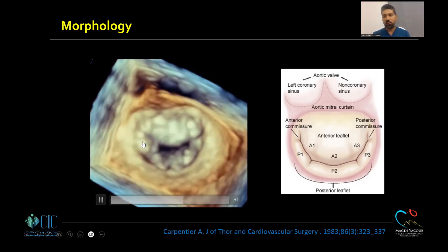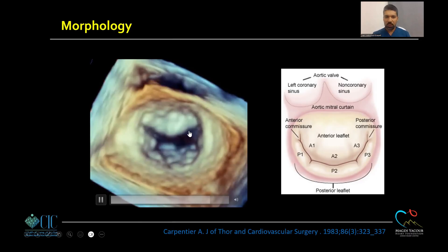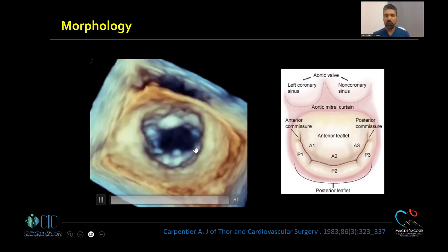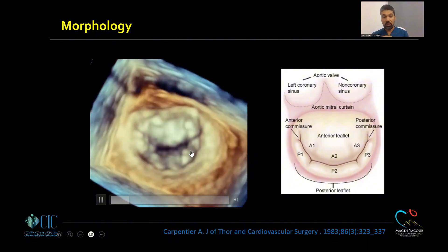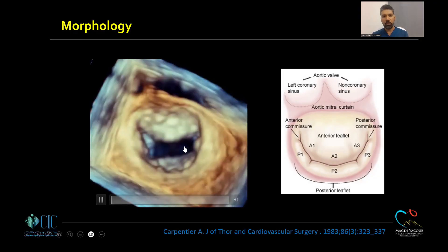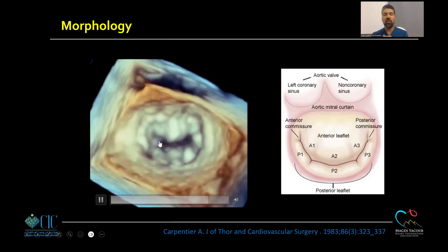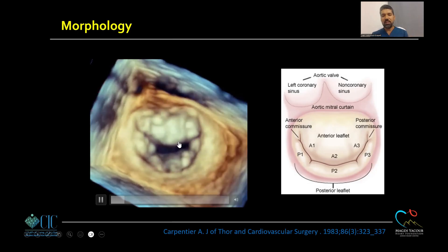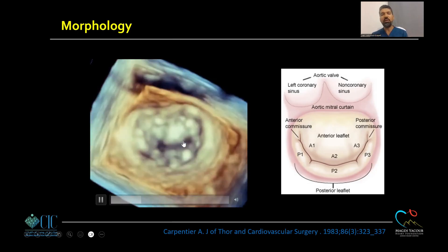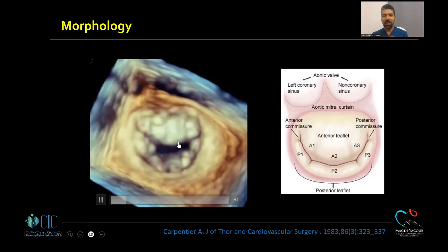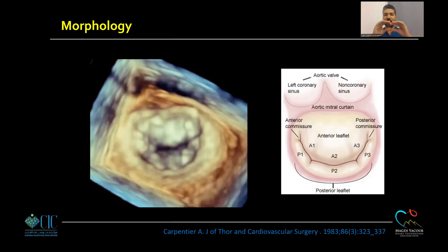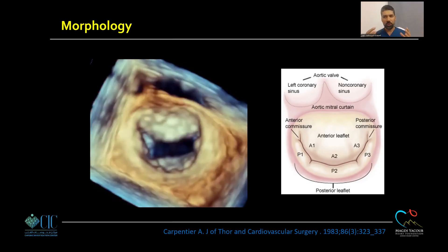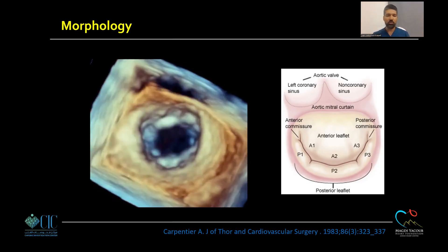Look at the mitral valve coaptation line — it is not a straight line. We have the anterior leaflet, the posterior leaflet, and the indentations in the posterior leaflet that divide it into distinct scallops: P1, P2, and P3, and the same for the anterior leaflet. Regurgitation can happen at any point along the coaptation line and can take any shape — circular, oval, elliptical, or patchy with multiple orifices. That's why it is really difficult to appreciate the severity of mitral regurgitation.